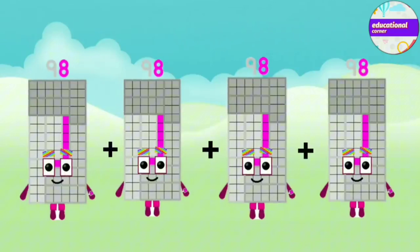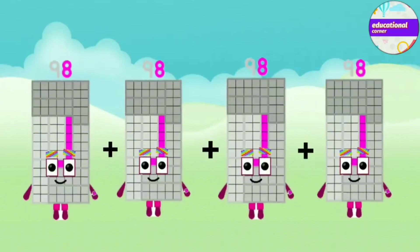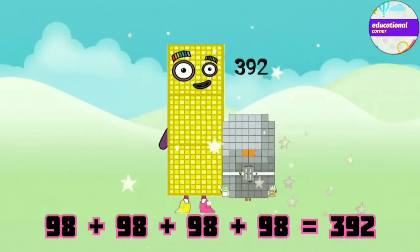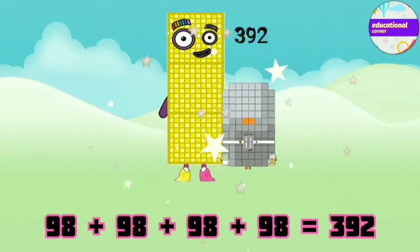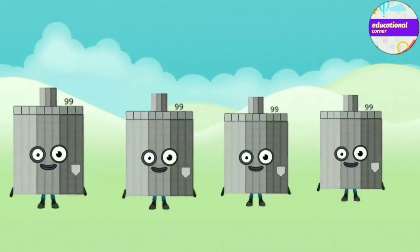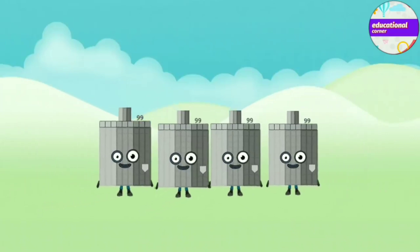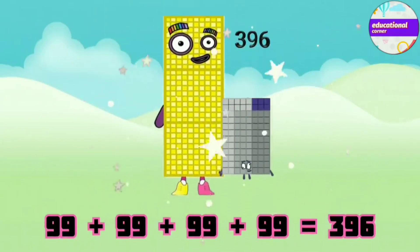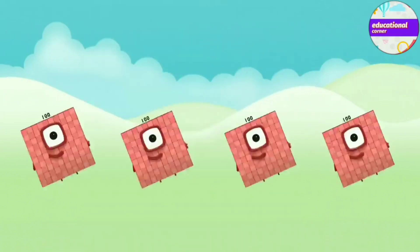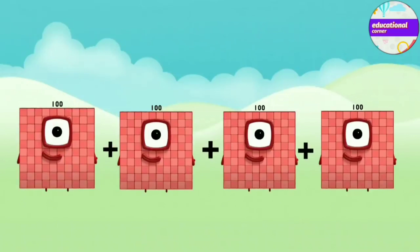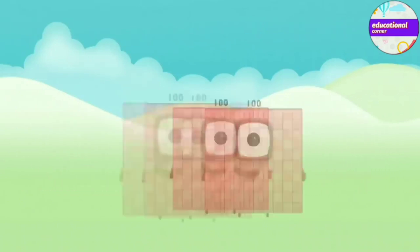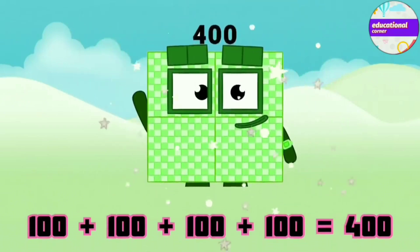98 plus 98 plus 98 plus 98 equals 392. 99 plus 99 plus 99 plus 99 equals 396. 100 plus 100 plus 100 plus 100 equals 400.